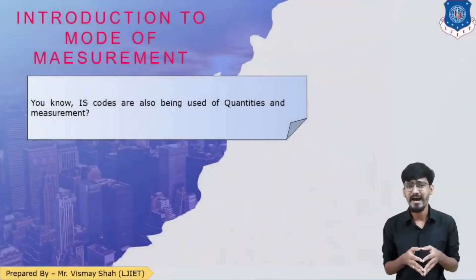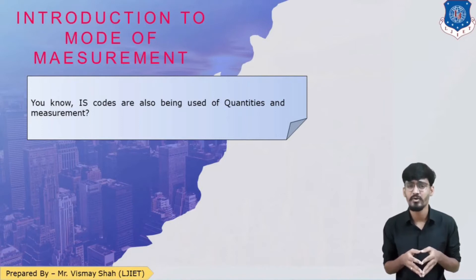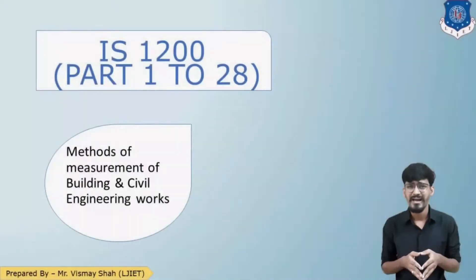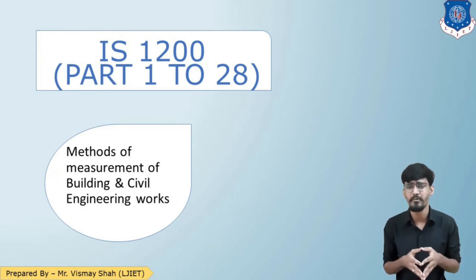Students, till now we have used IS codes mainly in structural subjects, but do you know that in quantity estimation there are also IS codes being used? Yes, in our quantity estimation process there are IS codes to be followed. IS 1200 part 1 to 28 is the IS code which we use in quantity estimation, named as 'Method of Measurement of Building and Civil Engineering Works'.